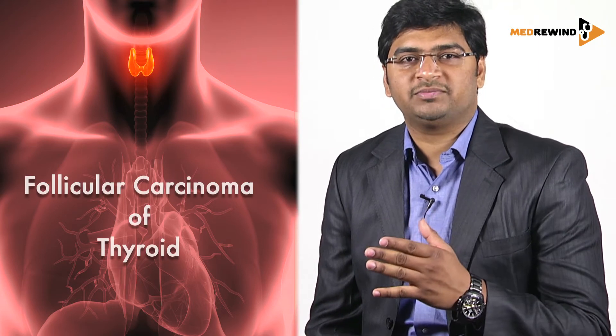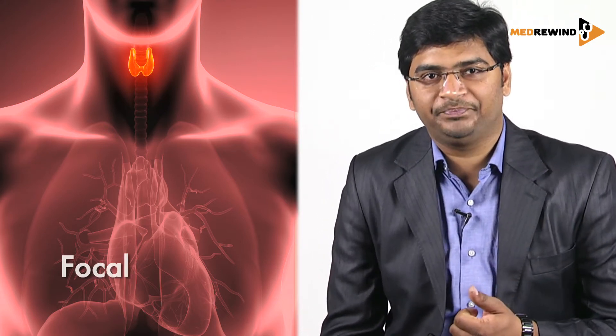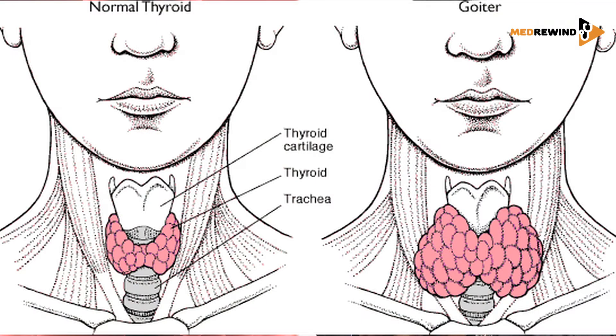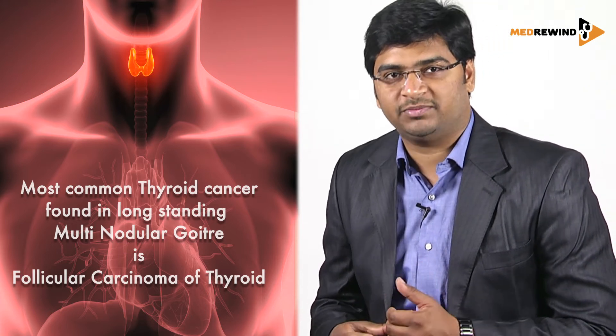Follicular carcinoma of thyroid starts with F, so some features can be remembered with the word F. The first is that it is multifocal, and the next F is that it is present in the follicles of long-standing multinodular goiter. When comparing with other forms of thyroid, remember multinodular goiter has follicles, and these follicles start with F — follicular carcinoma of thyroid.